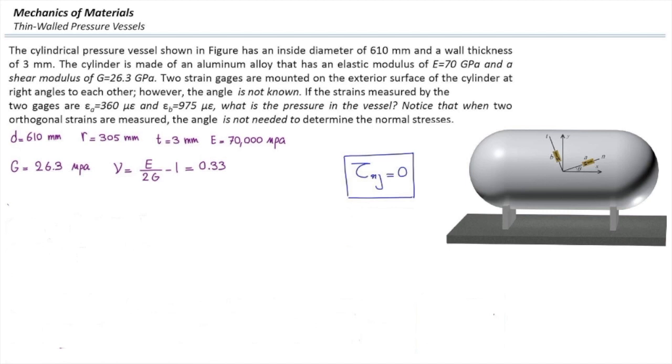Also, there is some hidden information. Tau xy in the original plane is zero because on the pressure vessel there is no shear stress. Also, there is no shear strain on the original plane.